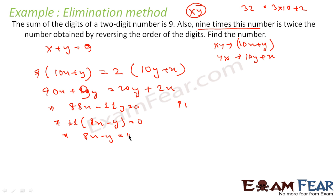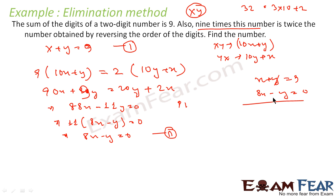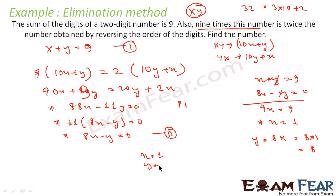This is equation 2, and x plus y equals 9 is equation 1. Now I have two equations: x plus y equals 9 and 8x minus y equals 0. Since the coefficients of y are equal in magnitude, I just add these equations. This gives 9x equals 9, so x equals 1. Now y equals 8x equals 8 times 1 equals 8. So x equals 1 and y equals 8.